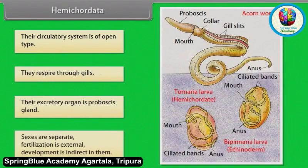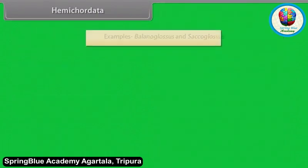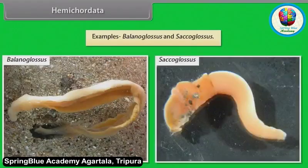Sexes are separate. Fertilization is external. Development is indirect in them. Examples: Balanoglossus and Saccoglossus.